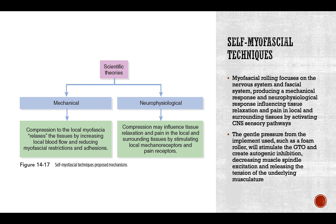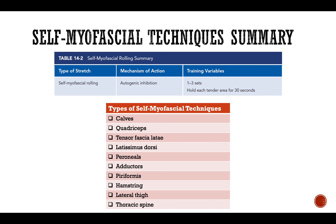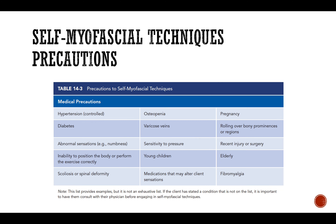SMR can be applied to calves, quads, TFL, lats, peroneals, adductors, piriformis, hamstrings, lateral thigh, and thoracic spine. The technique calls for one to three sets, held on the point of tenderness for about 30 seconds. Roll to the area, and as soon as you feel that point of tenderness, hold it — applying pressure and holding. A common mistake is not doing the hold.